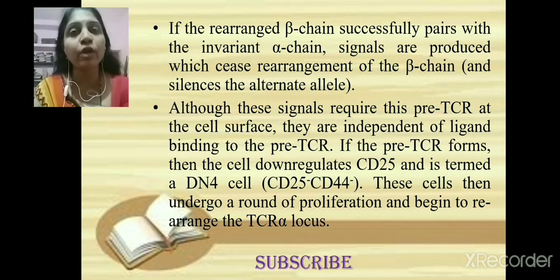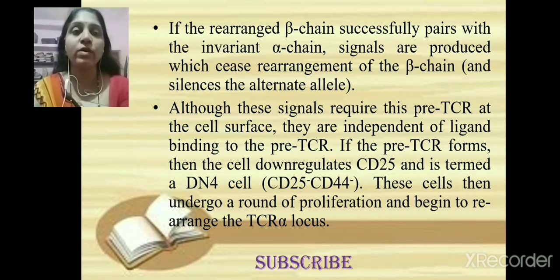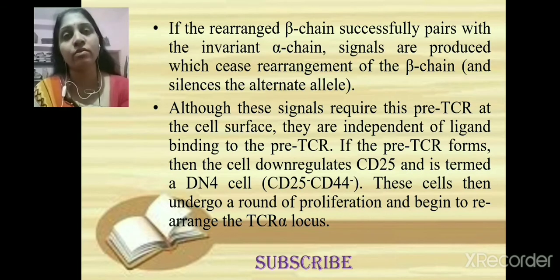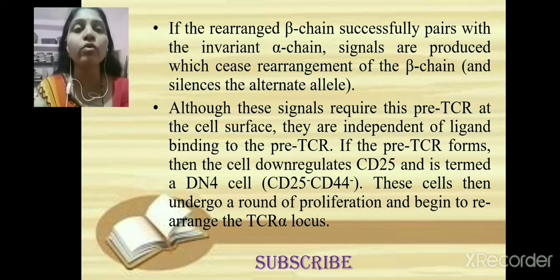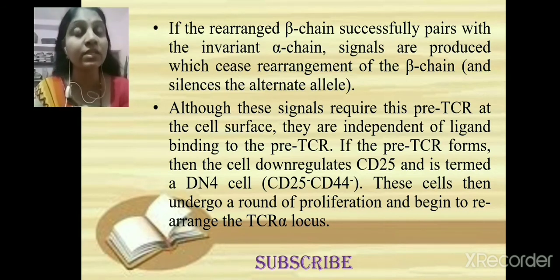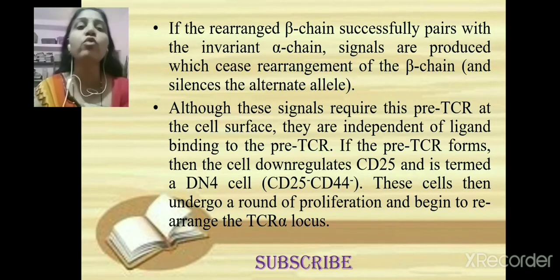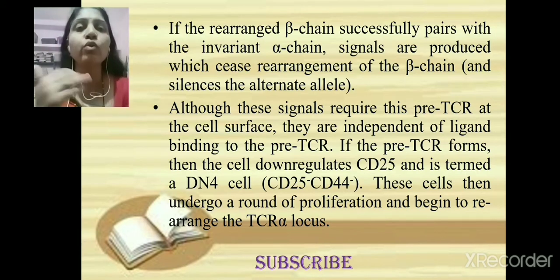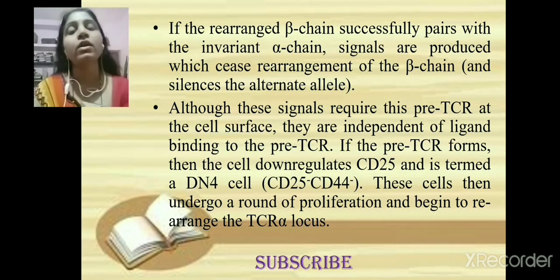Once the precursor TCR forms at the cell surface, the cells begin to down-regulate CD25, entering the DN4 stage. At the DN4 stage, cells are CD25-negative and CD44-negative. These cells then undergo a round of proliferation and begin to rearrange the TCR alpha locus, initiating synthesis of the alpha chain to eventually form the complete alpha-beta TCR.